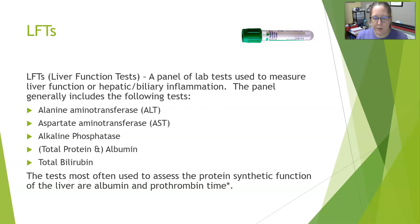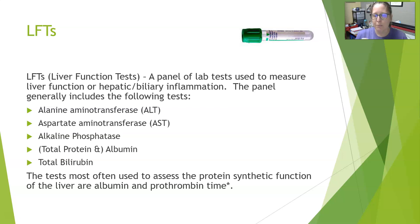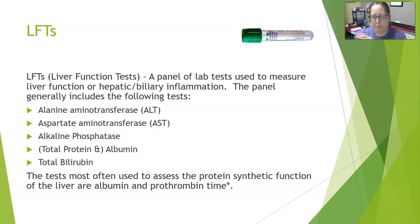The tests most often used to assess the protein synthetic function of the liver are going to be the albumin and the prothrombin time. The liver is a big protein factory and it manufactures the majority of the proteins in your body. Pretty much the only ones made outside the liver are antibodies made by white cells. About half the proteins floating around in your blood are albumin. The other proteins involved are all the clotting factors — the liver makes the clotting factors, transport proteins, albumin, et cetera.